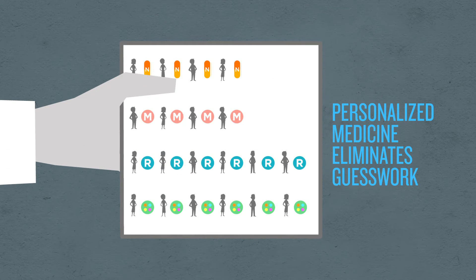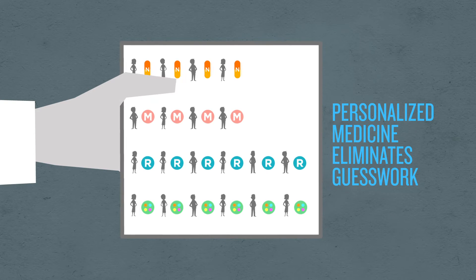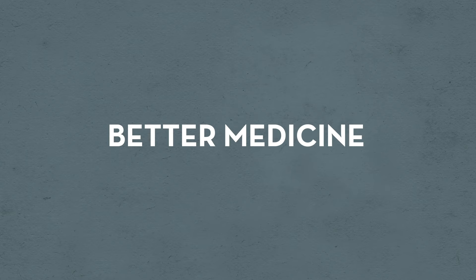There would be cost savings because patients wouldn't be given Remicade in instances where we knew conclusively that it would not work. And there would be better medicine with more efficient treatment and less visits to the hospital.